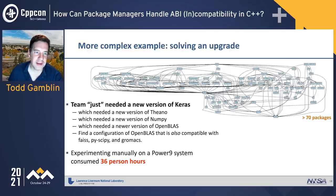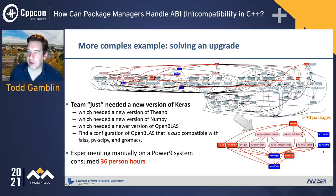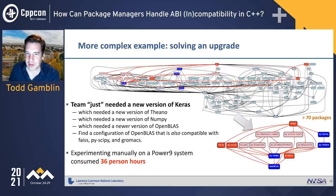For a more complex example — a system with 70+ packages — one of our teams needed a new version of Keras, which needs a new version of the Anna, which needs a new version of NumPy, which needs a new version of OpenBLAS. You have to consider the sub-DAG where all those packages live and find a version of OpenBLAS compatible not just with NumPy but also with Gromacs, SciPy, and FFTW. Doing this manually where constraints weren't well known for a Power9 machine at Livermore took about 36 person-hours. NP-hard problems are not something humans should be solving manually.